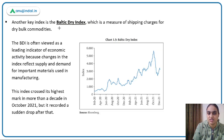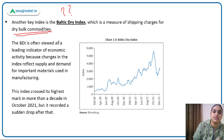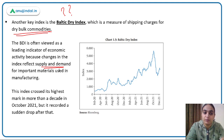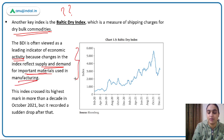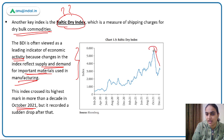The second parameter is the Baltic Dry Index, which tells us the shipping charges for dry bulk commodities. If the index is rising, it shows more shipping charges are being charged, indicating increased demand and supply activity. It is viewed as an indicator of economic activity because changes in the index reflect supply and demand for imported materials used in manufacturing. This index was at its highest in October 2021 but then saw a sudden drop.